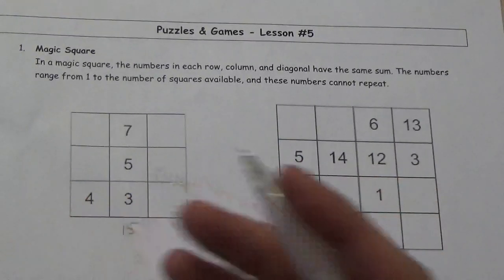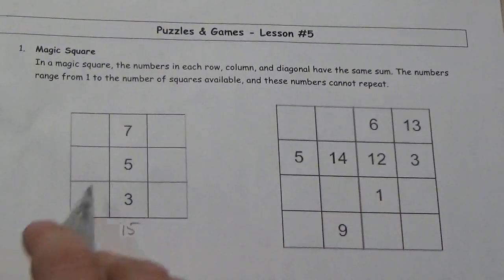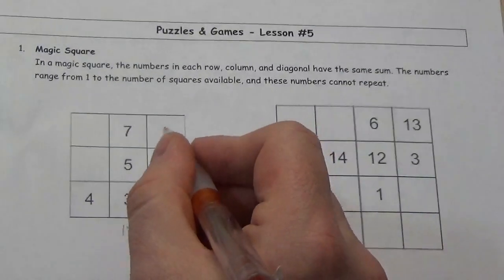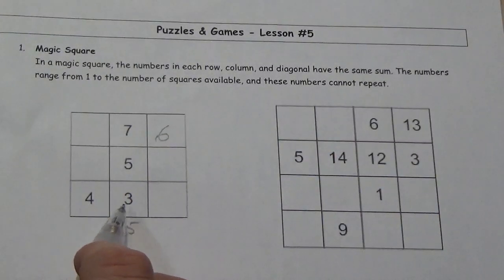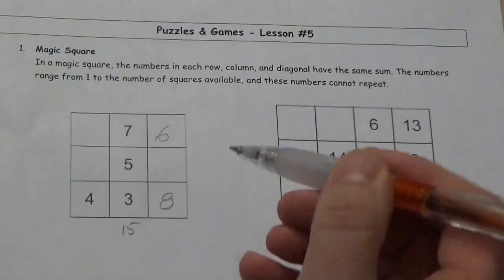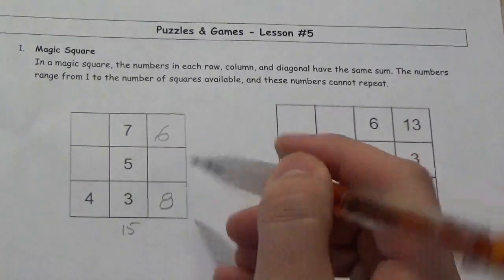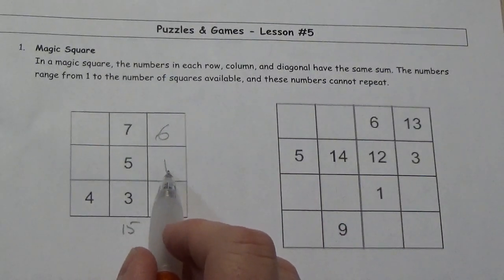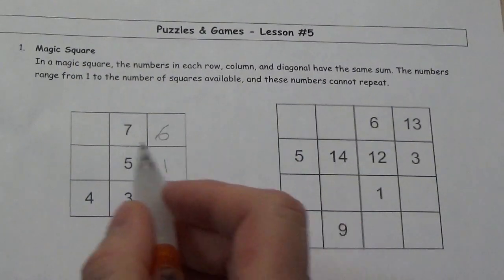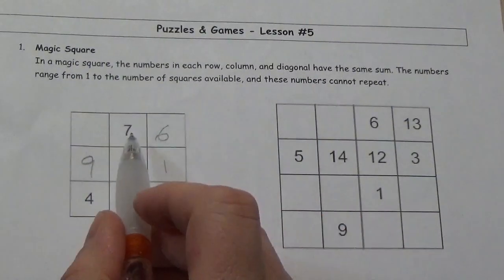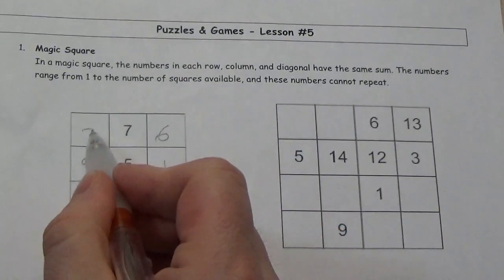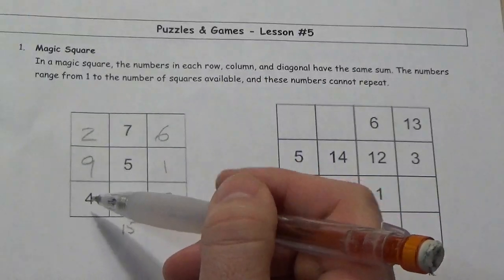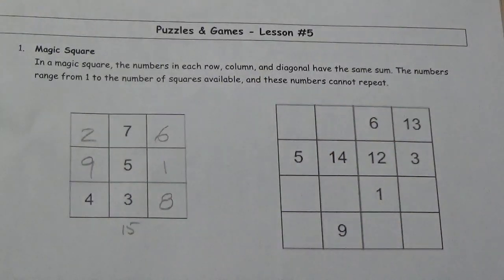From there, I can use that to fill in the rest of it because I know the diagonal must also add up to 15. So 4 and 5 is 9, and 6 is 15. Just like 4 and 3 is 7, and 8 is 15. Then 6 and 8 is 14, and 1 is 15. That leaves a 1 and a 5 there — 1 and 5 is 6, plus 9 is 15. 7 and 6 is 13, plus 2 is 15. And 2 and 9 and 4 are in fact 15. That's the solution.